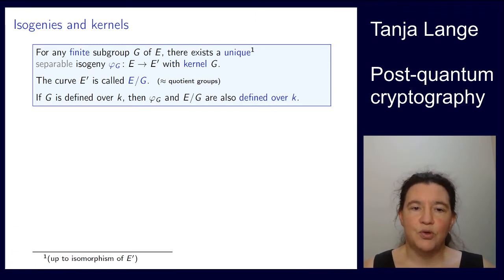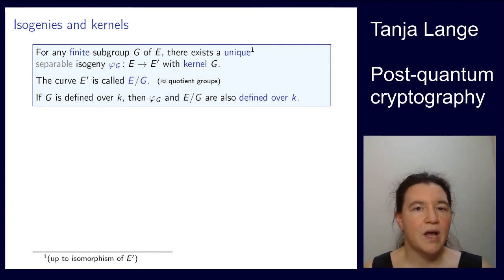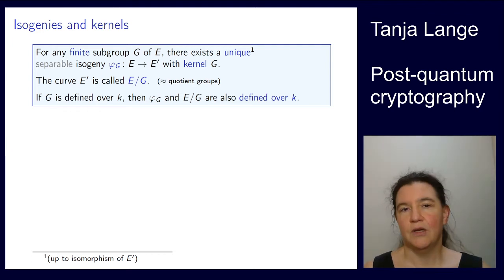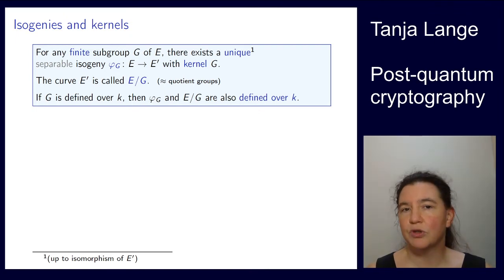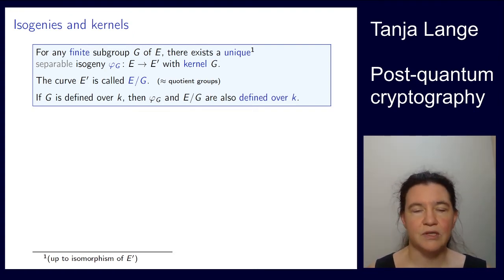We're getting closer to defining the main players of this lecture. How can we actually get an isogeny? The general way is: we pick a subgroup G of E, and then up to isomorphism there is a unique separable isogeny with exactly that subgroup G as its kernel. So E prime is isogenous to E, and to highlight the dependence on this subgroup G, we write this as E/G — reminiscent of quotient groups, but it's a map to a different curve.